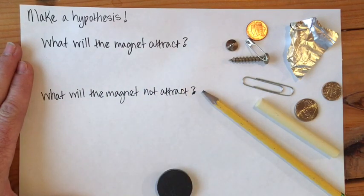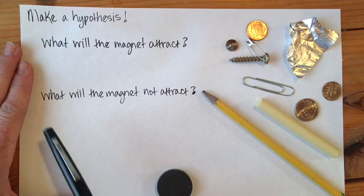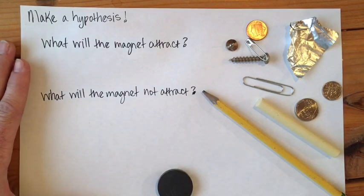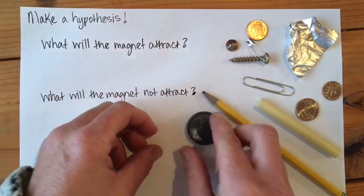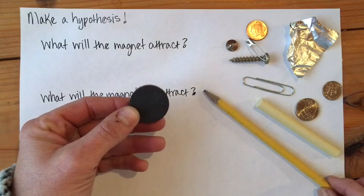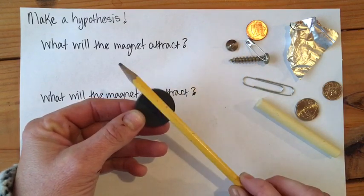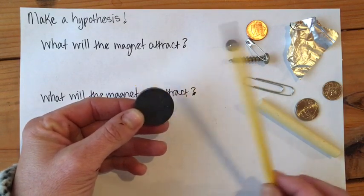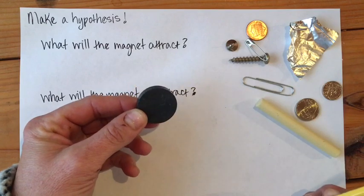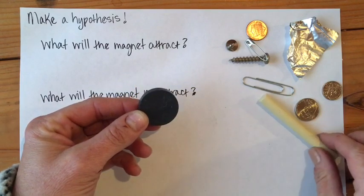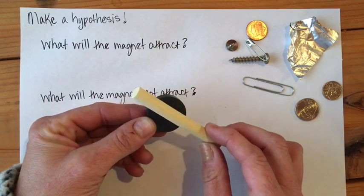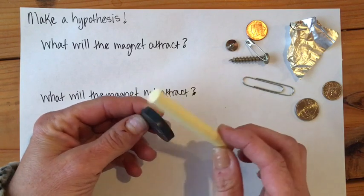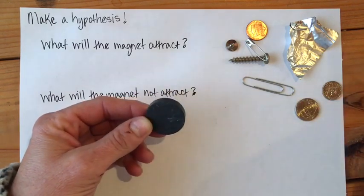All right, after you have guessed, we're going to actually conduct the experiment. So I'm going to take my magnet here and I'm going to try out the pencil, and it is not attracted to the magnet. Nope, doesn't work. All right, chalk. Does the chalk, is it attracted? Nope, the chalk is not working either.